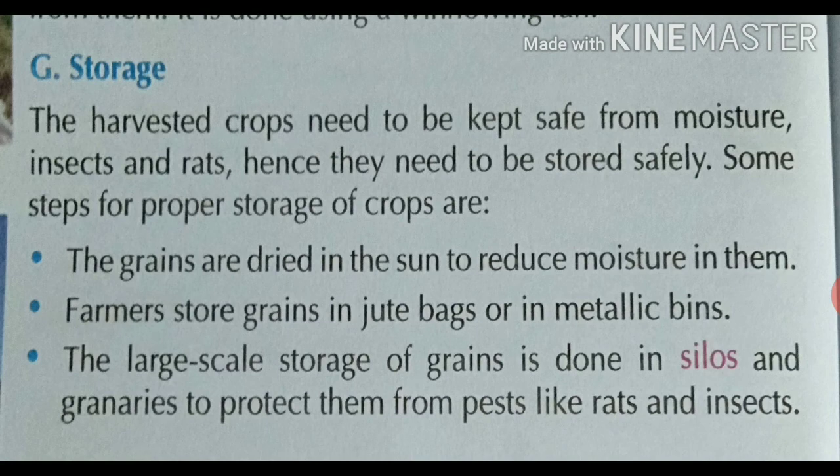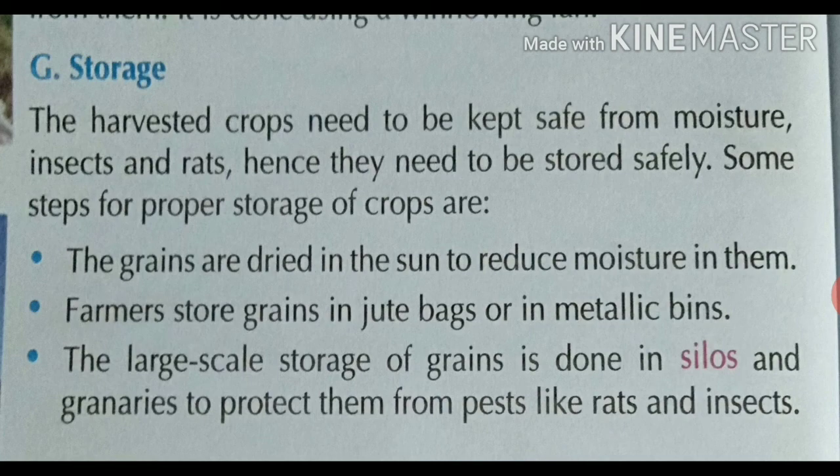Some steps are given for the proper storage of crops. The grains are dried in the sun to reduce moisture in them. If we dry the grains in sunlight, the moisture content inside them is reduced. By the help of sun drying we can reduce the amount of water that is present in the grains.